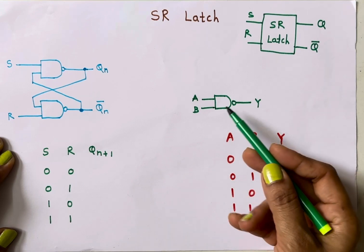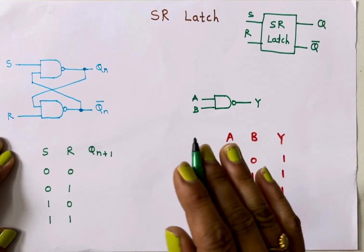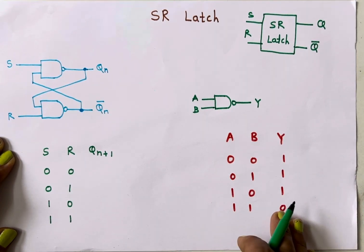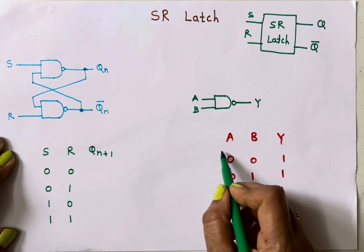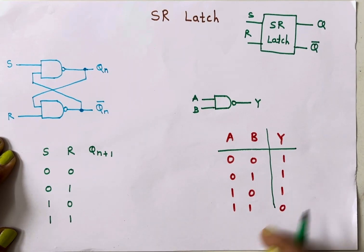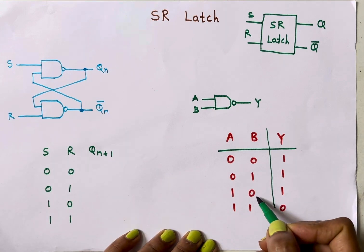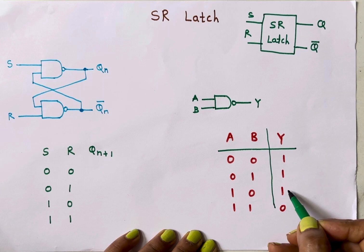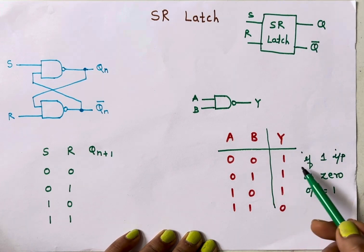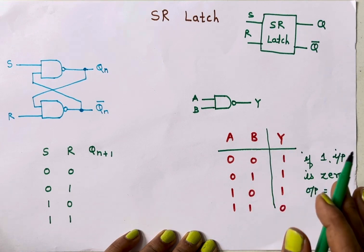The NAND gate has two inputs A and B, and output Y. NAND is the complement of AND. In an AND gate, when both inputs are one, output is one; otherwise zero. So in a NAND gate, when both inputs are one, output is zero; otherwise if any one input is zero, the output is one. Remember: if any one input is zero in a NAND gate, the output is one.